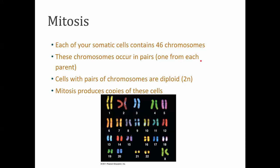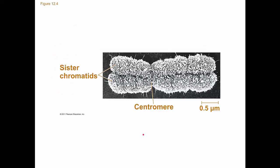When mitosis occurs, we take a cell that has 46 chromosomes and we simply replicate it, making another copy. Right before we go into mitosis, we go through S phase of the cell cycle in which DNA replicates. When that happens, the chromosomes, once they condense, will look like this - they consist of 2 sister chromatids. So this is one chromosome, but it's 2 identical sticks of DNA stuck together.